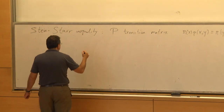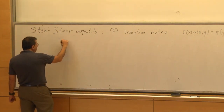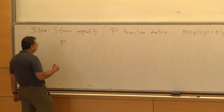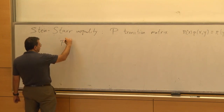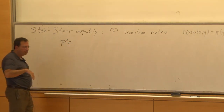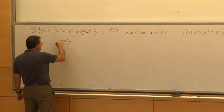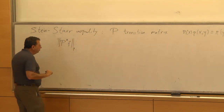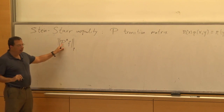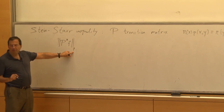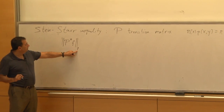Before stating the inequality itself, recall that P is a contraction in L2, and more generally in any LP space. So if I take P to the K and apply it to a vector F, or think of it as a function on the state space, and compute LP norms — note this little p is different from capital P — the case I will use today is just L2, but in other cases we care about different p's.